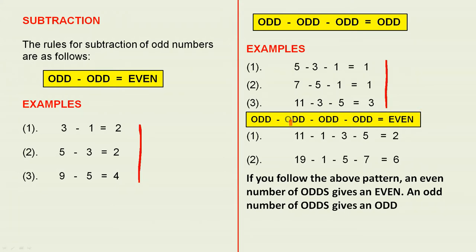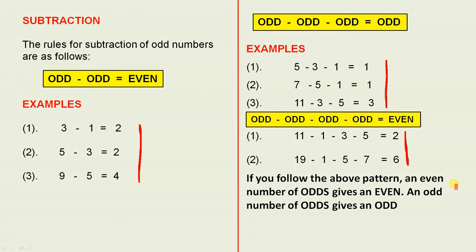And the last one: odd minus odd minus odd minus odd equals even, and there are two examples. The rule says, following the above pattern, an even number of odds gives an even, and an odd number of odds gives an odd.